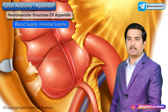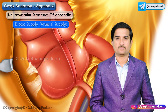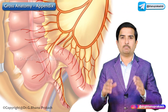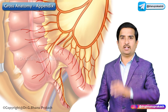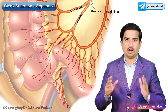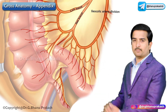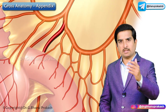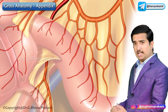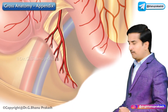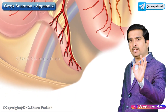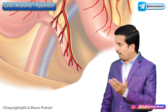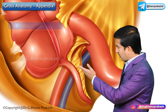Now let us talk about the neurovascular structures of the appendix. Regarding arterial supply, the appendix is supplied by the appendicular artery, which is a branch of the inferior division of the ileocolic artery. It is an end artery that enters the meso-appendix by passing behind the terminal part of the ileum and runs in the free margin of the meso-appendix to finally reach the tip of the appendix.